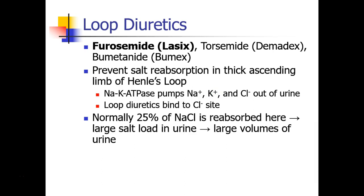Now we're going to talk about some of the more commonly encountered diuretics. The first class of diuretics are called loop diuretics. The most common is furosemide, also called Lasix, but there are other related drugs like torsemide, which is Demadex, and bumetanide, which is Bumex.